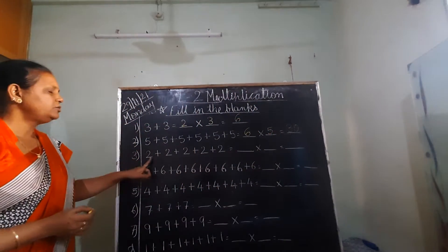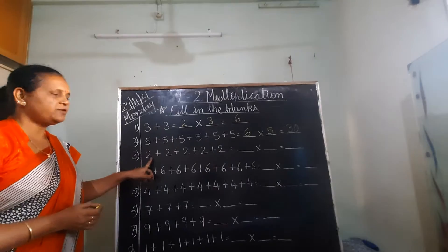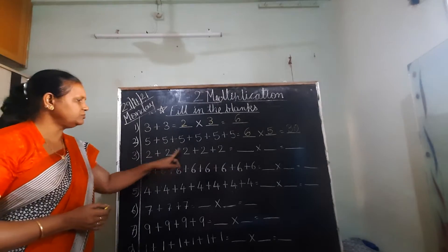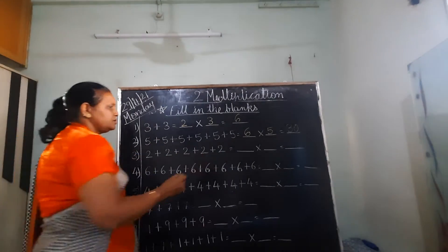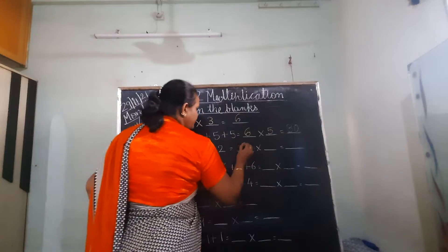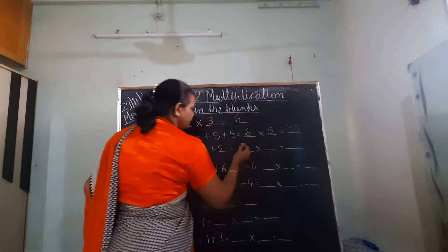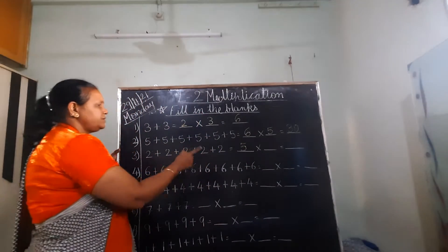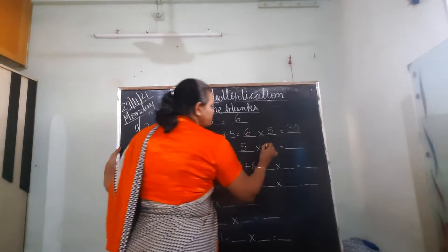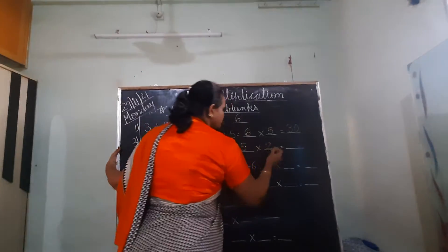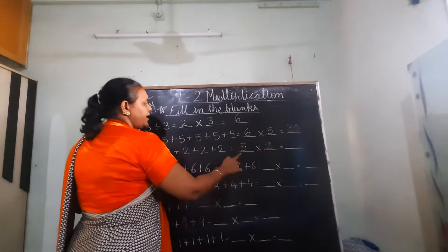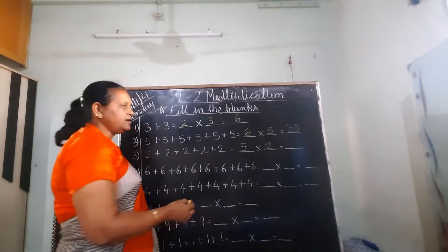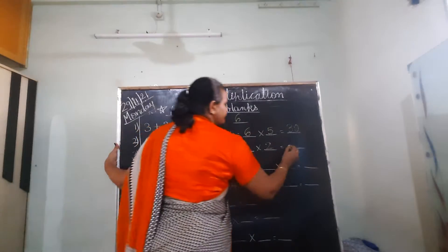2 is repeated for how many times? 1, 2, 3, 4, 5. So write down 5 here. And which number is repeated? 2. So 5 2's are 10.